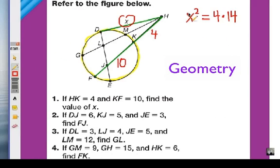Remember that this tangent segment X is squared, and that equals the external segment here times the entire segment. It's not 4 times 10. It's 4 times 14.